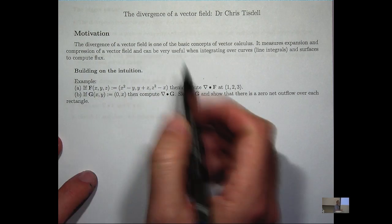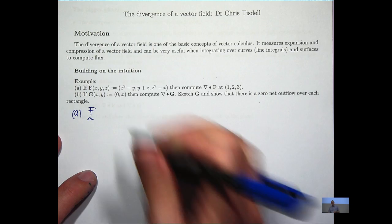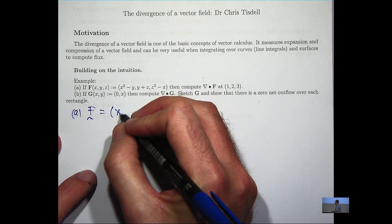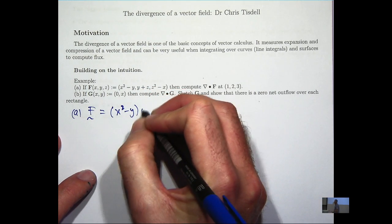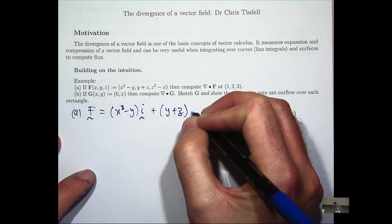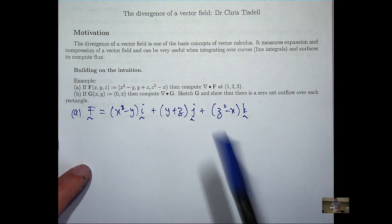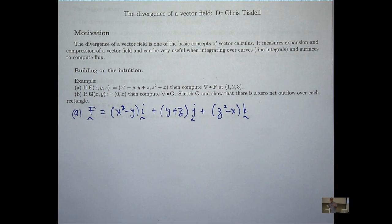So in the first case, now here I've written it as an ordered triple. I might just write that out as i, j, k, just so you know what my notation is here. So we're asked to compute the divergence of f at the point (1, 2, 3).